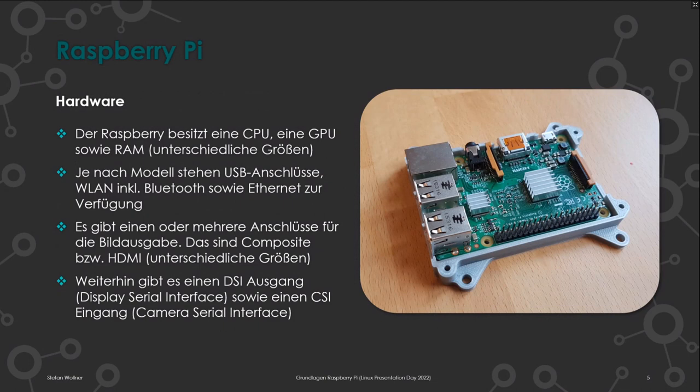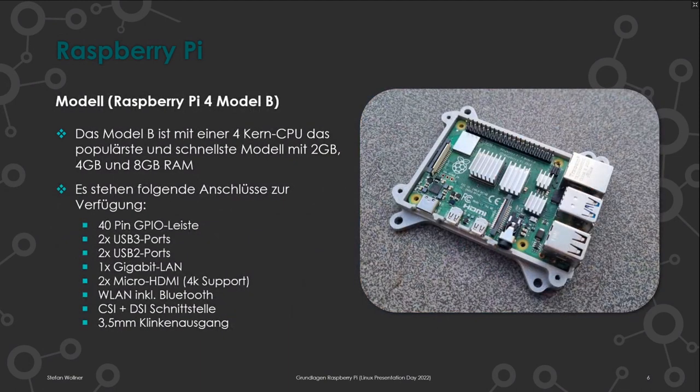Das bekannteste, schnellste und gefragteste Modell ist aktuell der Raspberry Pi 4. Ich habe auch einen davon ergattern können – im Moment sind sie recht schwer zu bekommen. Auch ältere Modelle können zum Testen von Linux gut genutzt werden. Das 4er-Modell hat verschiedene RAM-Größen, bei denen man sich vorab entscheiden muss. Es hat eine 40-pinige GPIO-Leiste, zweimal USB 3.0, zwei USB 2.0 und einen Gigabit-LAN-Port.